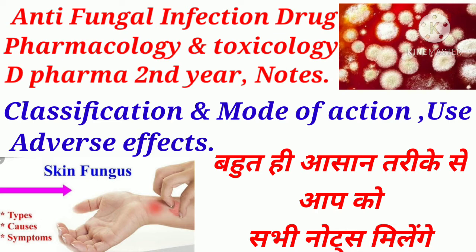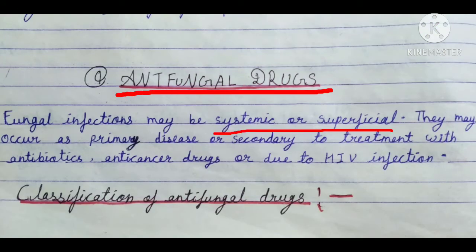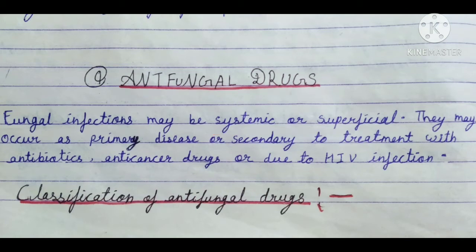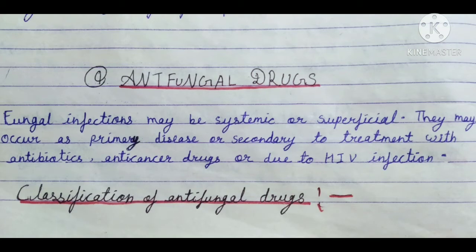Friends, fungal infection may be systemic or superficial. They may occur as primary disease or secondary disease due to treatment with antibiotics, anti-cancer drugs, or due to HIV infection. Antifungal drugs are used for both systemic and superficial infections.